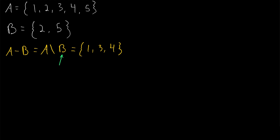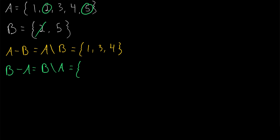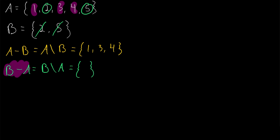However, to take the complement of one set with respect to another, it is not necessary to have this subset relation. We could look at the opposite order. Consider the set B minus A — this is the relative complement of A with respect to B. It's the set of all elements in B except for those that are also in A. Well, 2 is in A so it will get removed, and 5 is in A so it will get removed. As for 1, 3, and 4 — they are not in the set B so nothing happens with them. We are just left with the empty set, because B has no elements that are not in A.